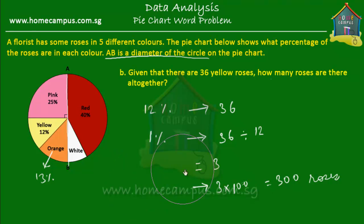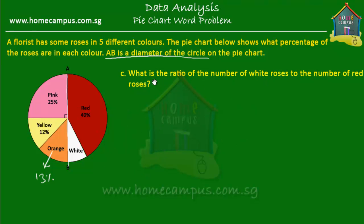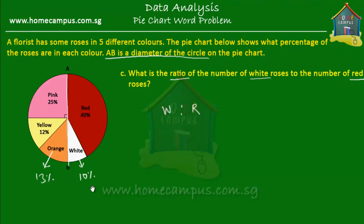Let's see the next question — this is the last question. It says: what is the ratio of the number of white roses to the number of red roses? Now, what do we know about the white roses? The white roses are 10% of all the roses. Because diameter AB divides the pie chart into two halves, red plus white together equal 50%. And we know that the red roses are 40%, so obviously the white roses are 10%. Now let's find out the total number of red and white roses.